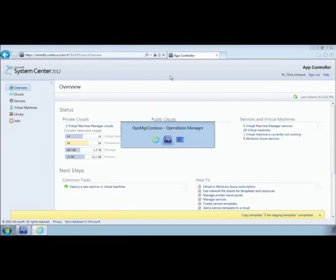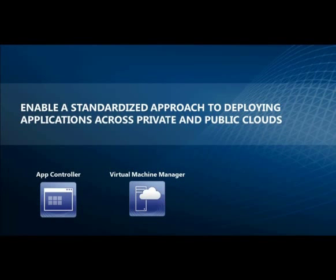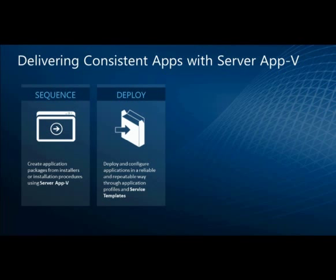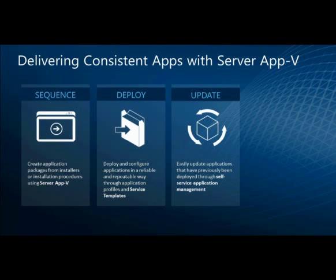Now that we know how to do all that underlying application resource and service template management, we're going to look at how we deploy applications. Server App-V has four parts. First is sequencing — it's literally an install and capture mechanism. You start it, do all the installation, configure your application, and it captures everything you changed on the way through. Once captured, you move into deploy mode — it enables that application as a template in our library, injected into service templates and deployed the same way every time.